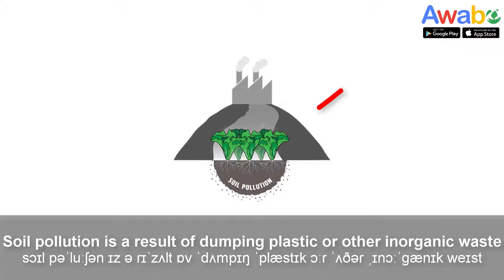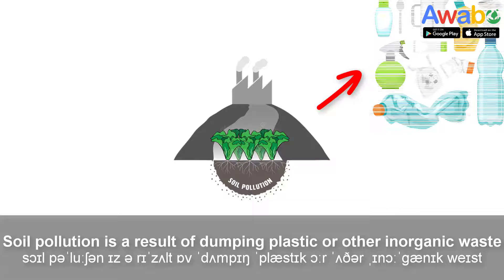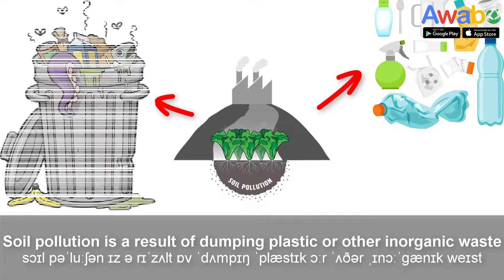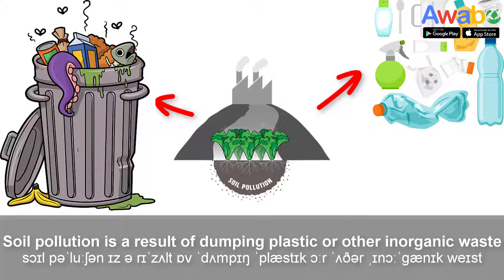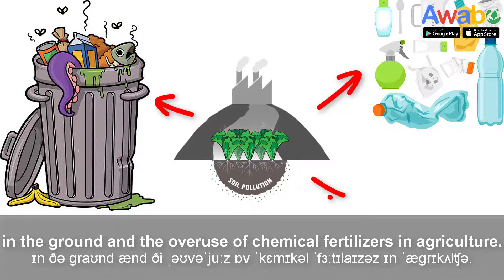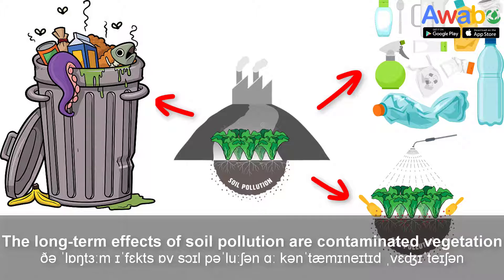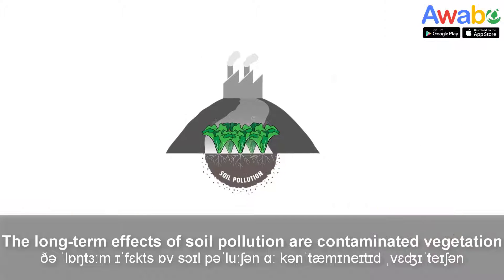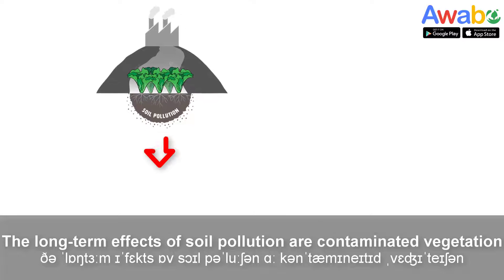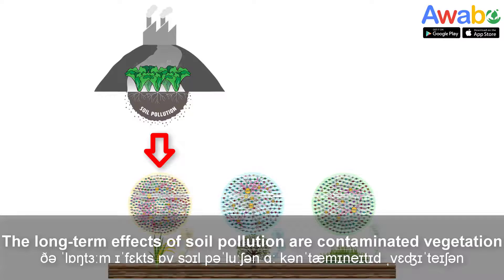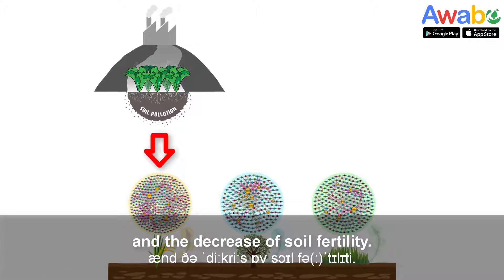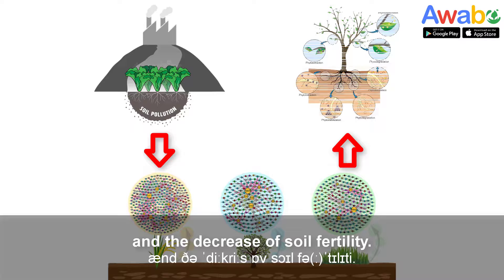Soil pollution is a result of dumping plastic or other inorganic waste in the ground, and the overuse of chemical fertilizers in agriculture. The long-term effects of soil pollution are contaminated vegetation and the decrease of soil fertility.